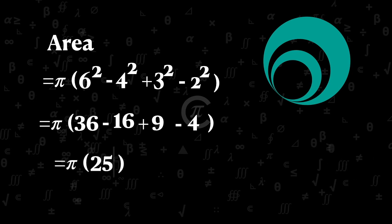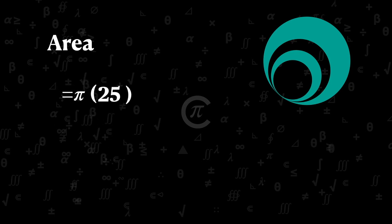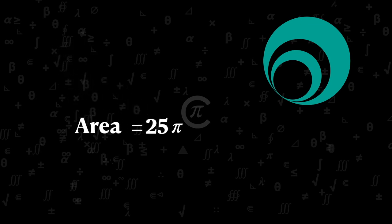Area becomes pi into 25 which is 25 pi. Finally, the area of shaded region equals 25 pi. So the correct answer is 25 pi.